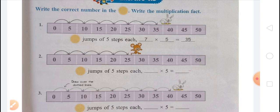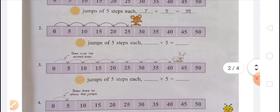In the third, you have to draw the dotted line. A rabbit jumps: 0 to 5 — 1; 5 to 10 — 2; 10 to 15 — 3; 15 to 20 — 4; 20 to 25 — 5; 25 to 30 — 6; 30 to 35 — 7; and 35 to 40 — 8. So the rabbit jumps 8 jumps, and in each jump there are 5 steps. In the circle, you will write 8. 8 jumps of 5 steps each equals 8 multiplied by 5 equals 40, because 8 is the number of jumps and 5 is the number of steps in each jump.